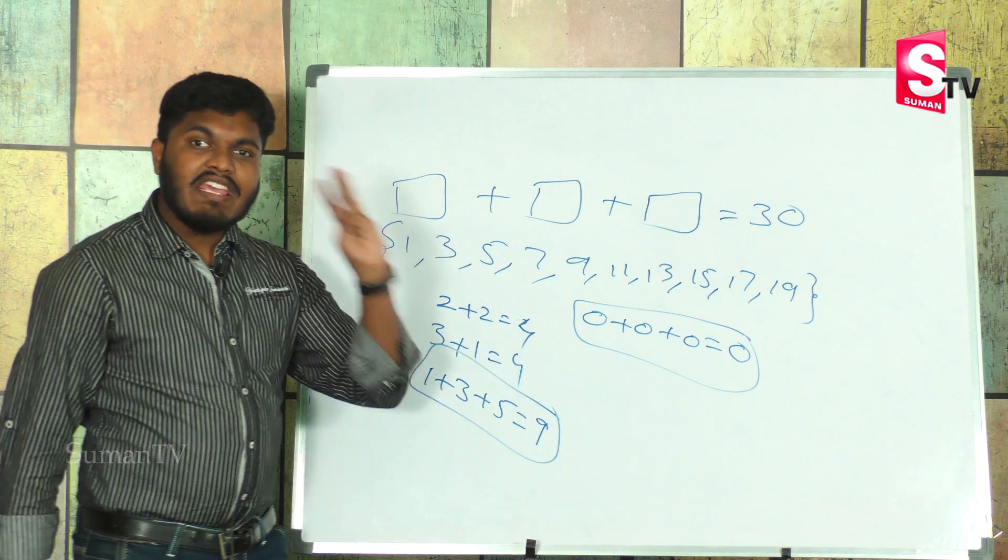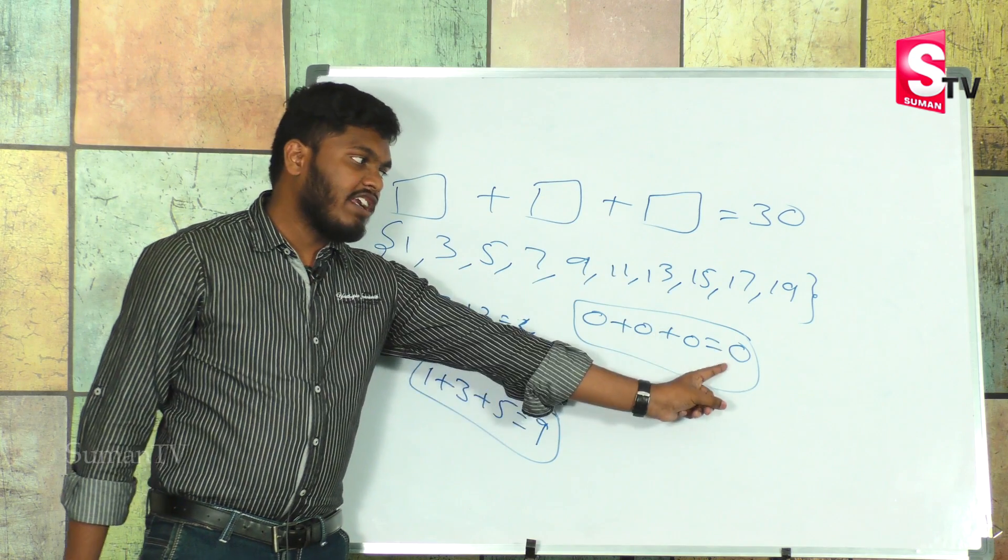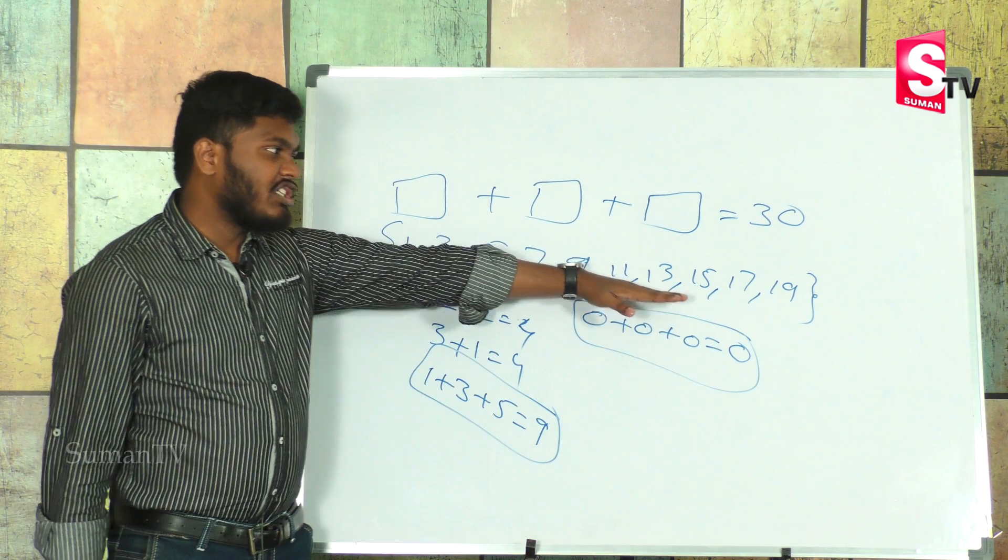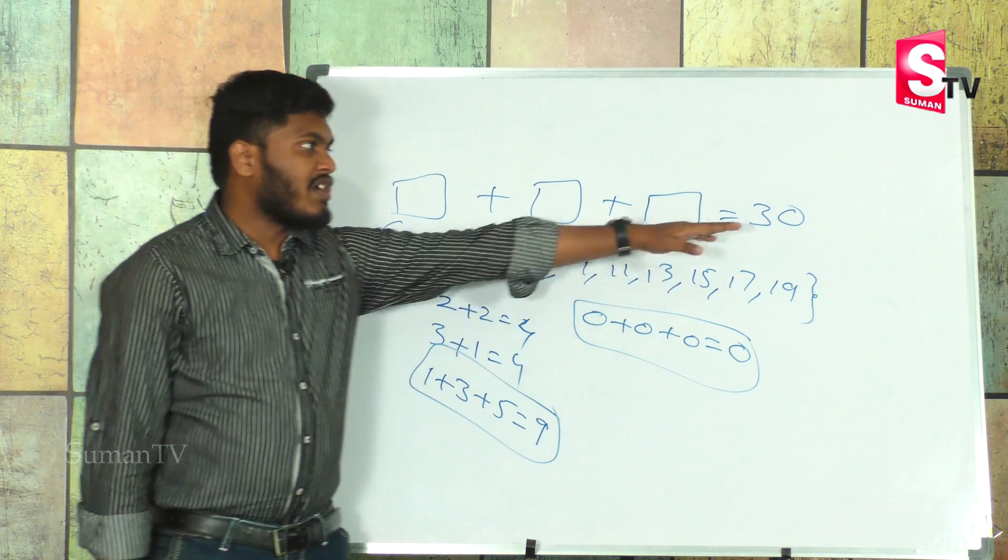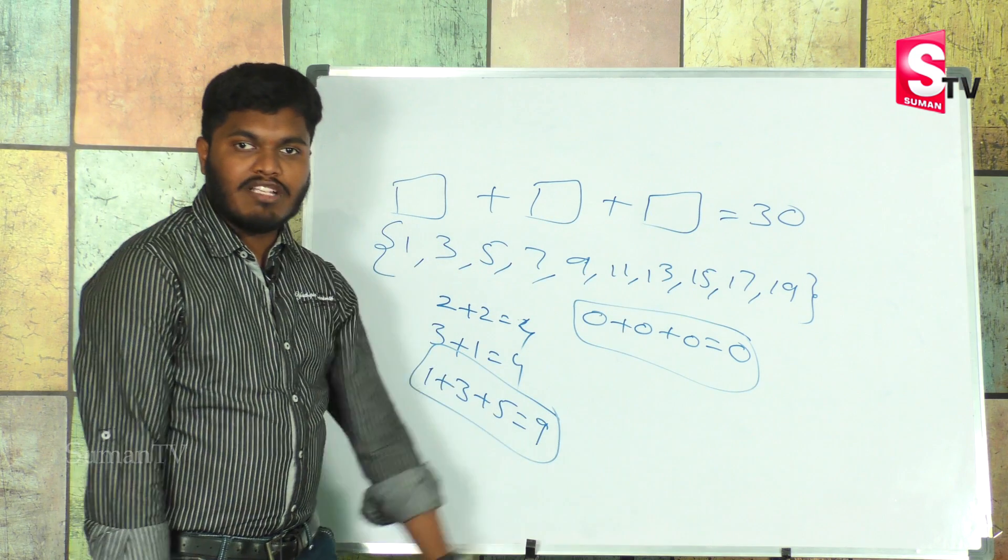If you add three odd numbers, definitely you will get an odd number. But our answer is an even number, 30. How is this possible?